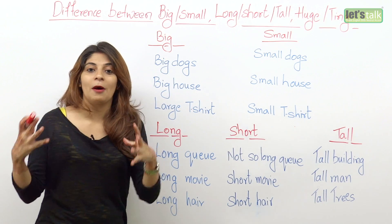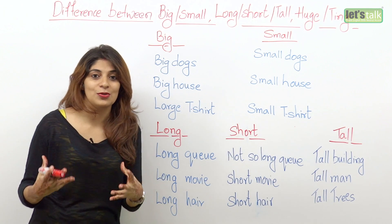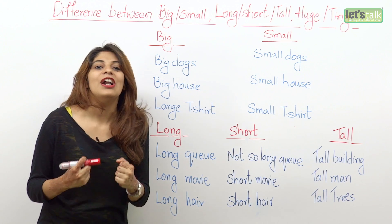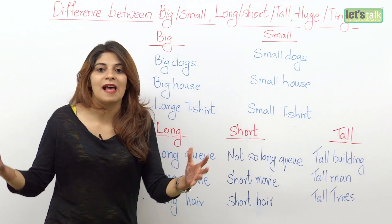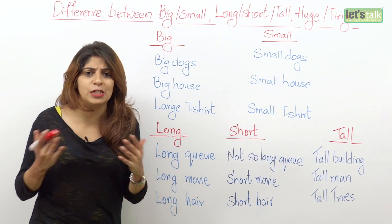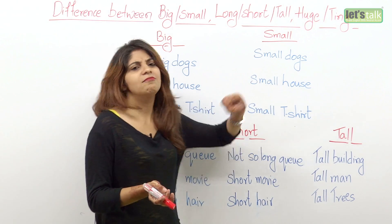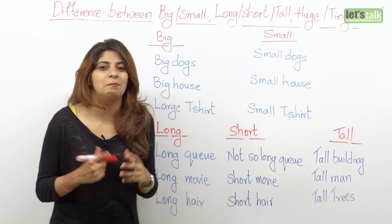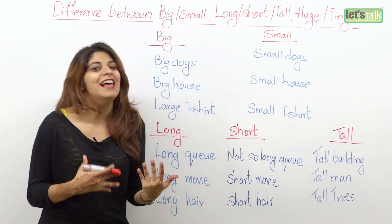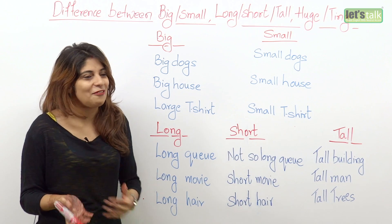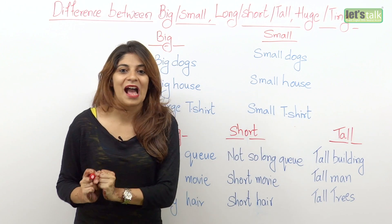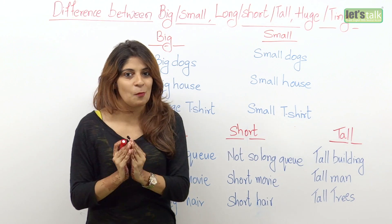So when you are talking about big dogs you will use the word big, because we are just talking about the general size of a dog. I love big dogs more than small dogs because I feel that big dogs are a little more docile and a little more loving than the smaller ones. That's how you use the adjectives big and small.